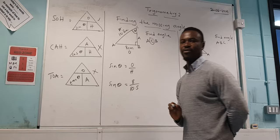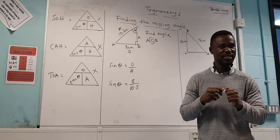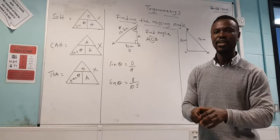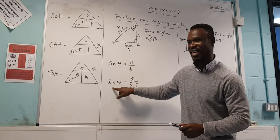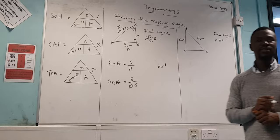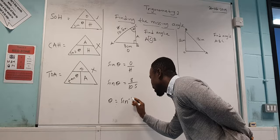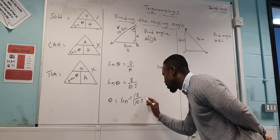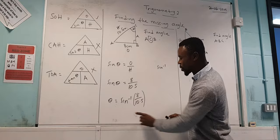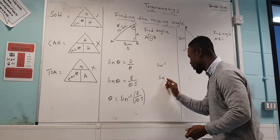To find theta, this time on your calculator we have to do what we call the inverse sine. So on your calculators, all you have to do is press the shift button and press the sine. Once you do that, you should see this symbol on your calculator. You should see that on your calculator.